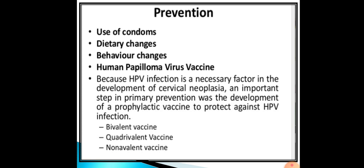Current WHO vaccination schedule: for females under 15 years, two doses are given at 0 and 6 months. For females 15 years and older, three doses are given at 0, 1–2, and 6 months. Immunocompromised individuals receive a three-dose schedule. Vaccination is effective for at least 7.5 years.